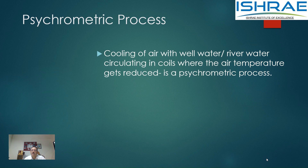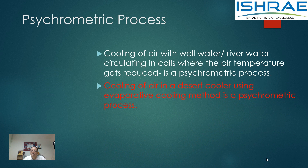Cooling of air with well water, river water, or spring water circulating in coils — where the air temperature gets reduced — is a psychrometric process. Cooling of air in a desert cooler is also a psychrometric process. In a desert cooler, water gets consumed through evaporative cooling: the temperature of air comes down and humidity goes up. This is a psychrometric process.